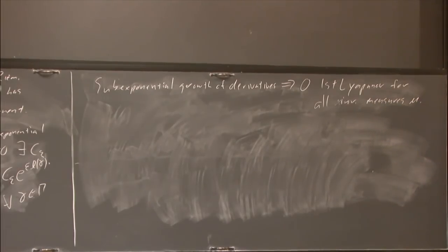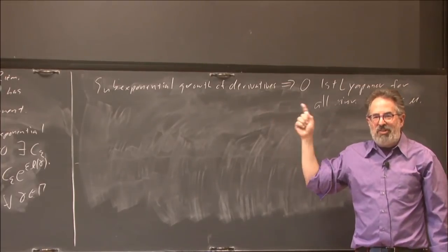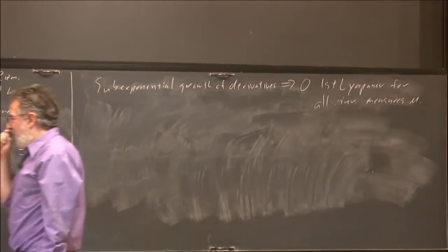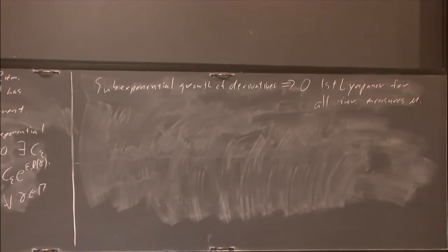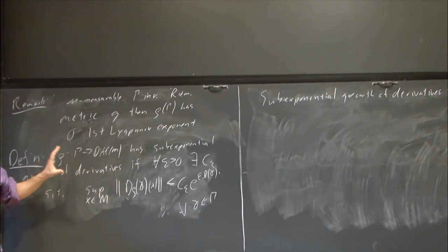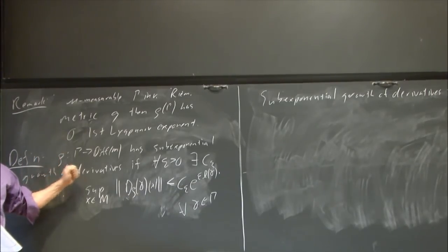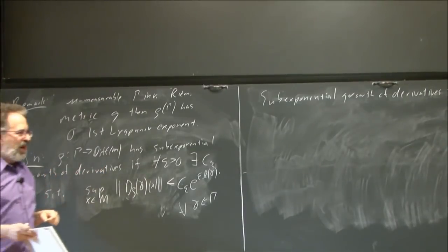Sub-exponential growth of derivatives—the uniform everywhere statement—implies the non-uniform almost everywhere Lyapunov exponent statement. That direction is clear. And what you want to do is go in the other direction. The heart of the proof is: can you go in the other direction? Once we know the group action has this property, we can finish. So this really is the pivot point of the proof: first you prove your group action has this property, then you prove that's enough.